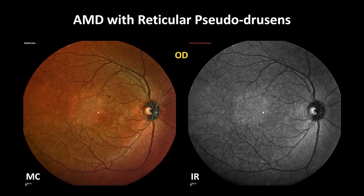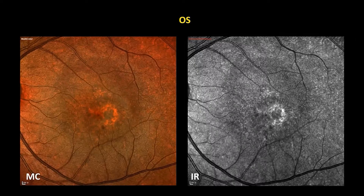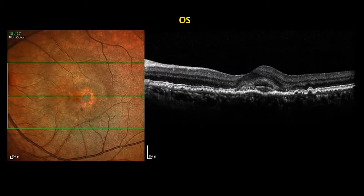Multicolor imaging is very useful to look at reticular pseudodrusen. On this case, the green-yellowish patches on multicolor in the macular area correspond to the pseudodrusen on OCT in the right eye. On the left eye, we saw similar changes on multicolor and infrared reflectance. We even see CNV on OCT.